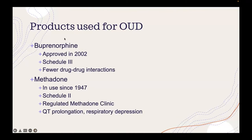That leads me to a little overview about the products being used for OUD. Buprenorphine is a more recent introduction to the OUD space, as it was approved in 2002 for the treatment of opioid use disorder. This is a Schedule III opioid analgesic with fewer drug-drug interactions than other OUD products and opioids.